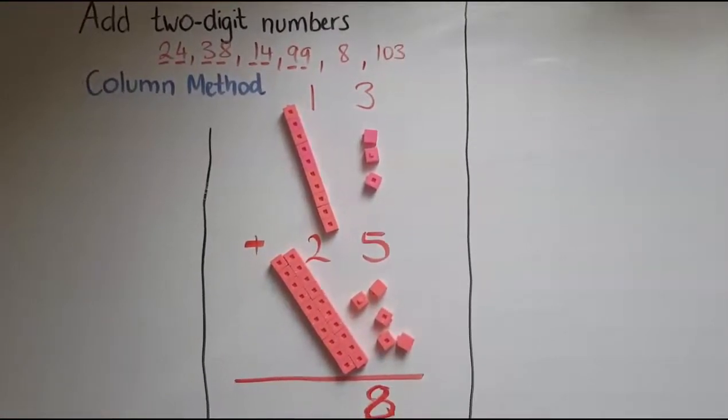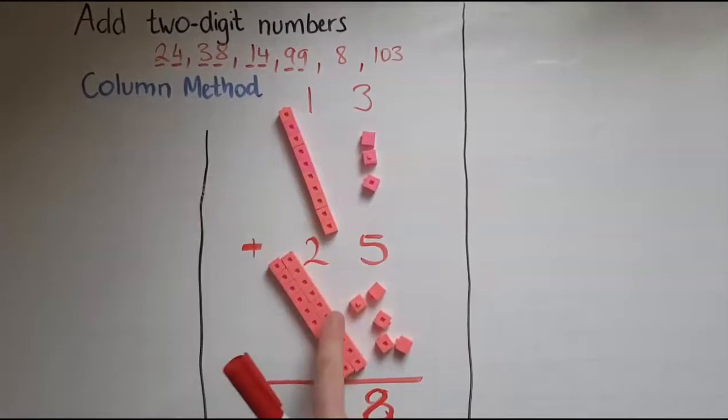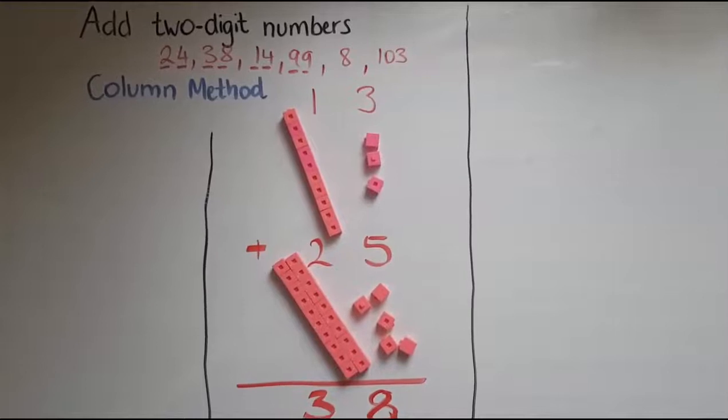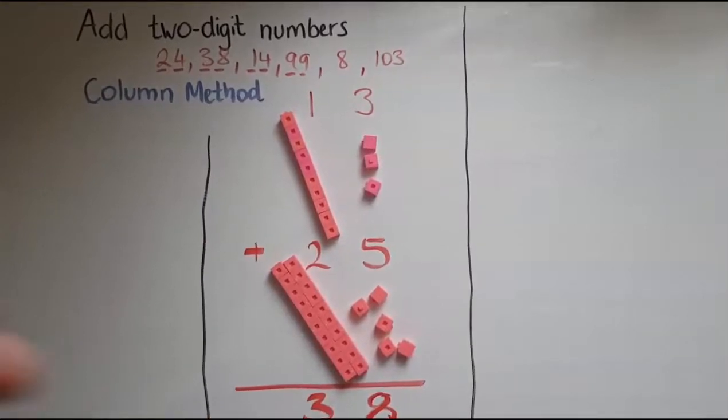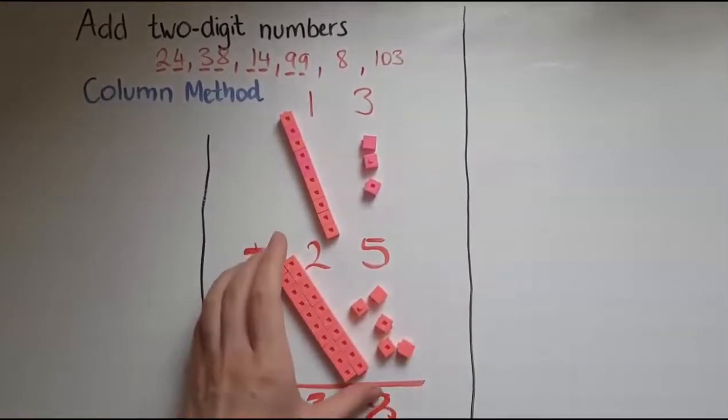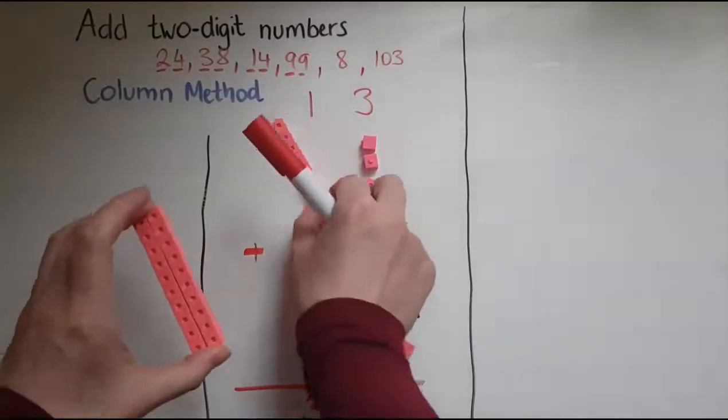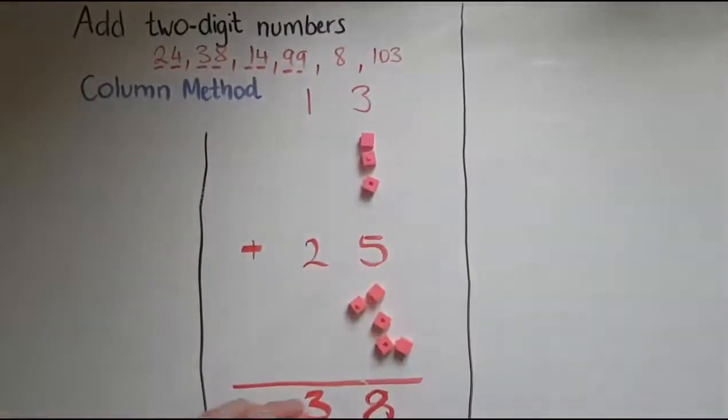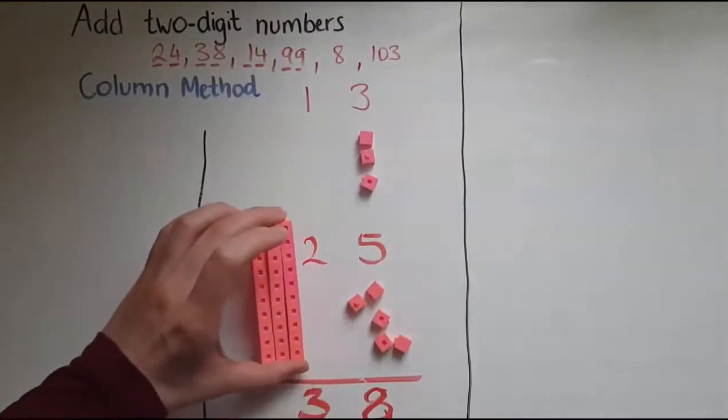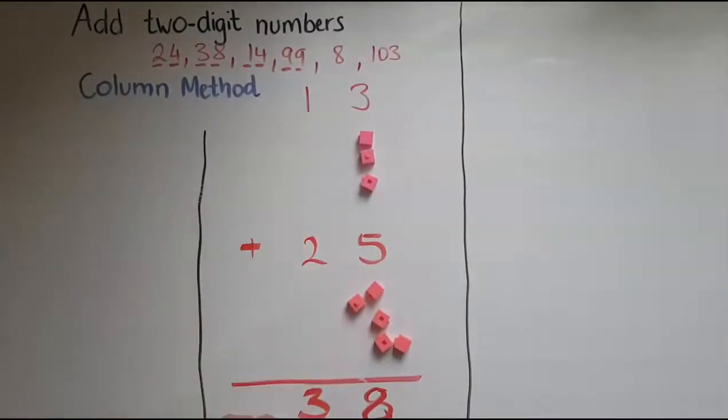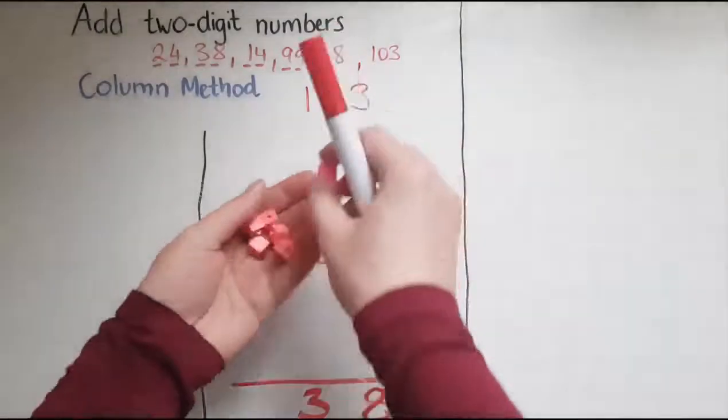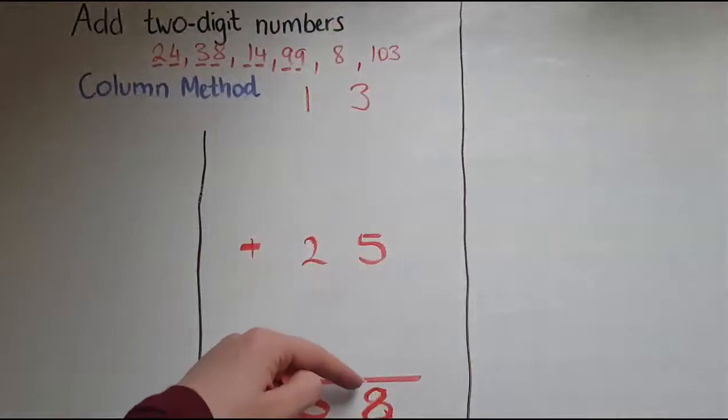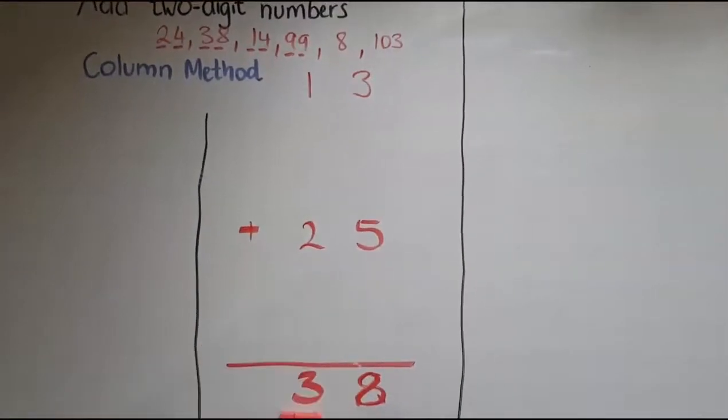And when it comes to the tens, I've got a block and another 2. So that's 3 blocks of 10. So the answer is 38. So all together, this is 38 which is represented by the 3 blocks of 10. So this 3 is represented by the 3 blocks of 10, and these 8 represent the 8 here, the units.